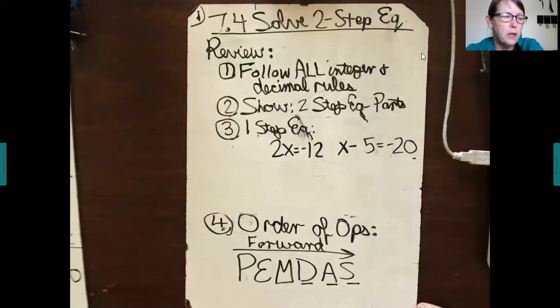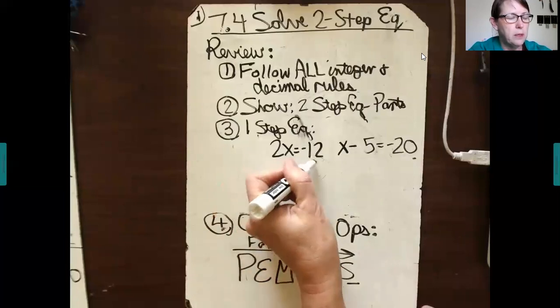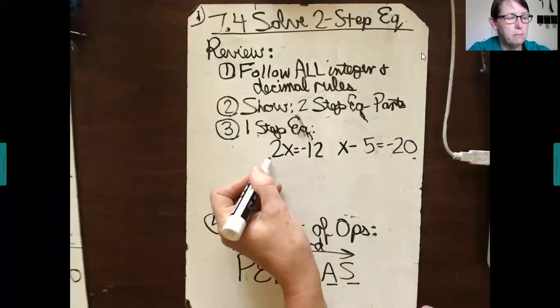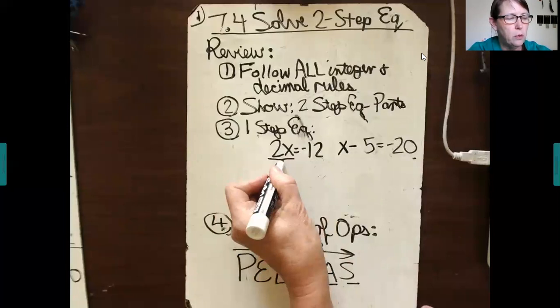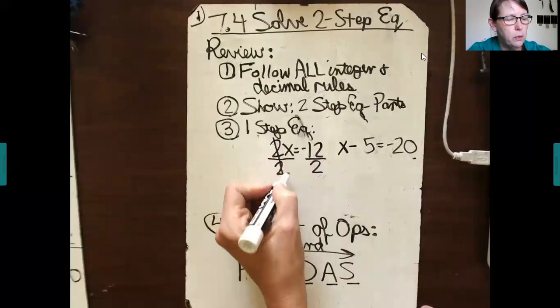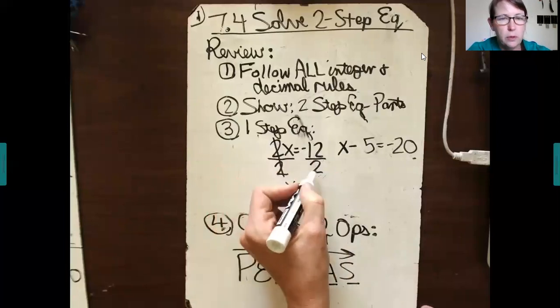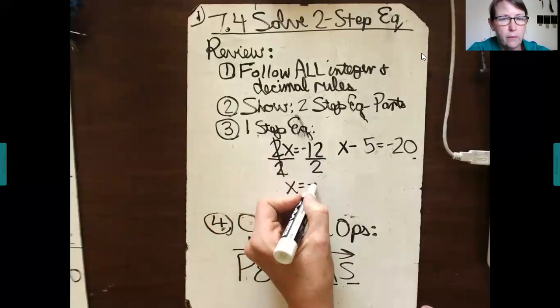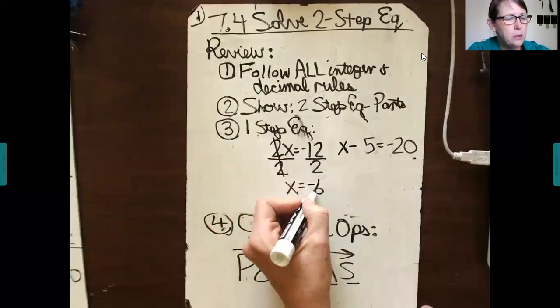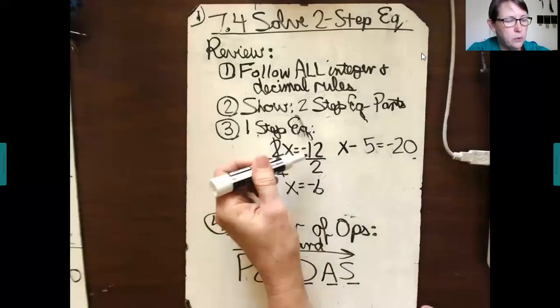Make sure you know how to solve a one-step equation, one like this one right here. 2 times x equals negative 12. The opposite of multiplication is division. What you do to one side you must do to the other. 2 over 2 is 1. 1 times x is x. Negative 12 divided by 2 is negative 6. You can check it. 2 times negative 6 does equal negative 12. That is your solution, x equals negative 6.